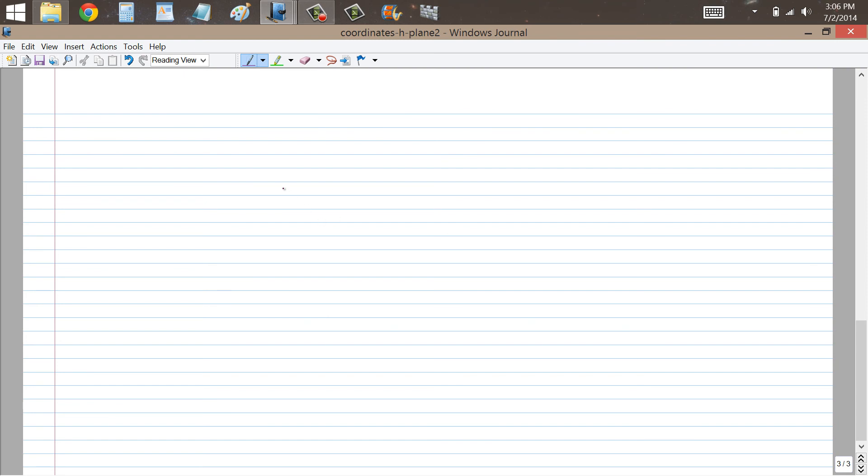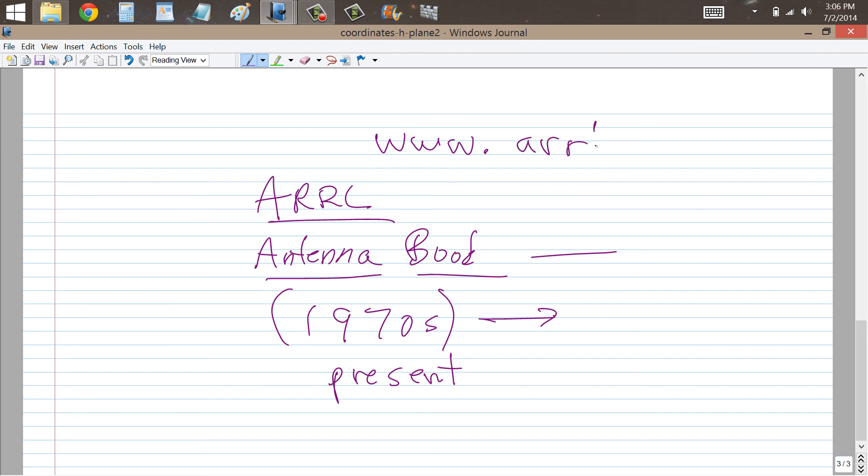The ARRL antenna book will show you a lot of directional patterns if you get an older edition. Now, I had an older edition back in the 1970s. I assume that they still have the same information in there and even more as antennas have evolved. So this is the book I would recommend that you get a hold of. And you can go to www.arrl.org and order it if you are really into antennas and things like that as I am.